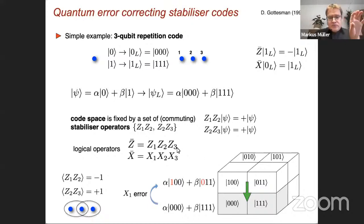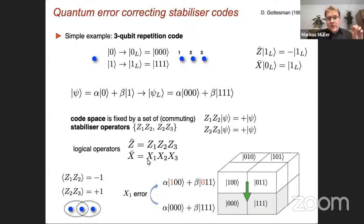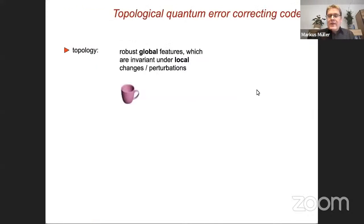We also have logical operators that operate within the code space. They define a logical qubit with a logical zero and logical one state. A logical X operator — in this case the Pauli X on all three qubits — flips this logical state. A logical Z operator imprints a relative minus sign onto the two basis states. This is a very limited code of only three qubits, but we can see that more complicated codes such as topological error correcting codes can be formulated within this same stabilizer formalism.